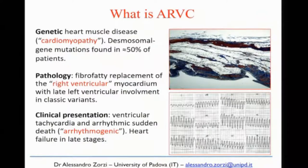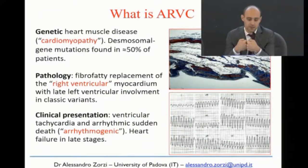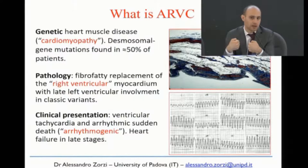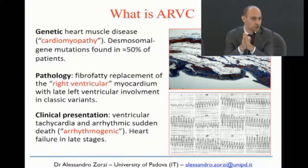What is ARVC? It is a heart muscle disease, a cardiomyopathy due to mutations in the desmosomes. Desmosomes are the structures that link myocytes — one myocyte is linked to another via desmosomes. If the desmosome is weak, when the myocyte contracts, they can rupture. This is the basic pathophysiological basis of arrhythmogenic cardiomyopathy. When this rupture occurs, the myocytes die and there is replacement by fibro-fatty tissue, which gives rise to arrhythmias.